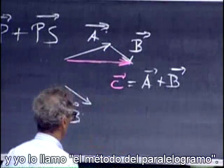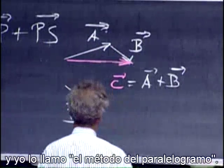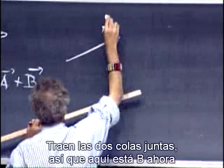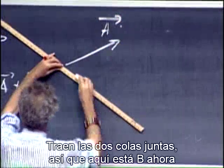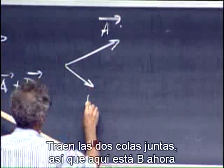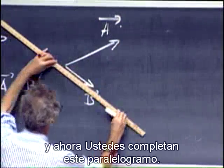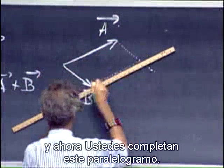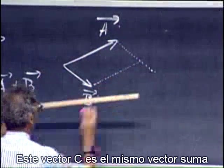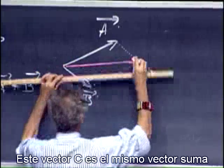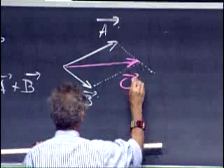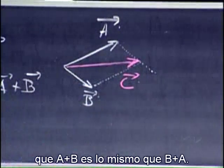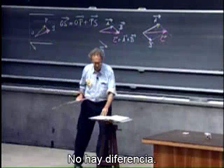There's another way you can do it, and I call that the parallelogram method. You bring the two tails together, and now you complete this parallelogram, and this vector C is the same sum vector, whichever way you prefer. You see immediately that A plus B is the same as B plus A. There is no difference.